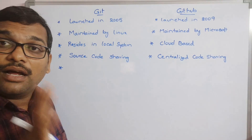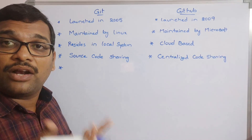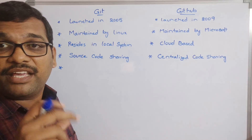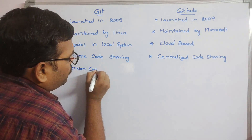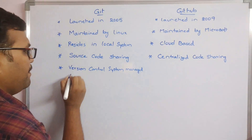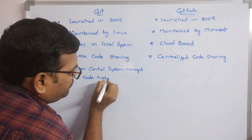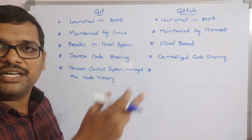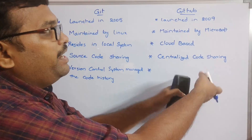Git is a version control system for managing source code history. Whatever changes we have done on our source code, everything will be managed here — it maintains different versions of the source code. GitHub manages Git repositories, so wherever we are creating code, everything will be maintained by GitHub.